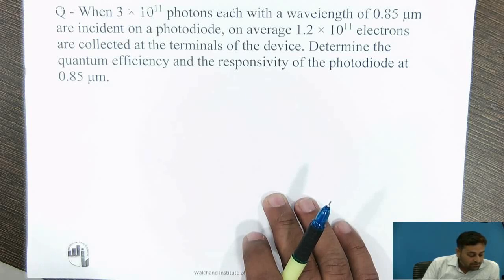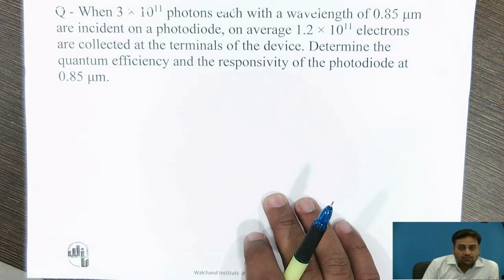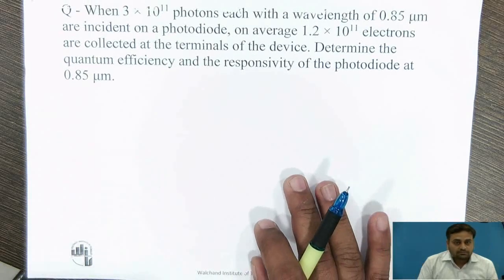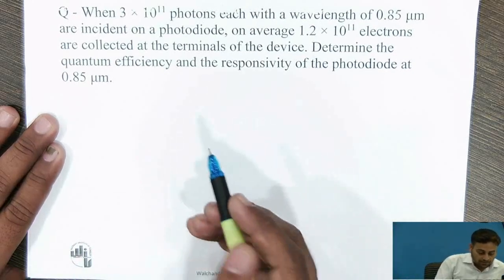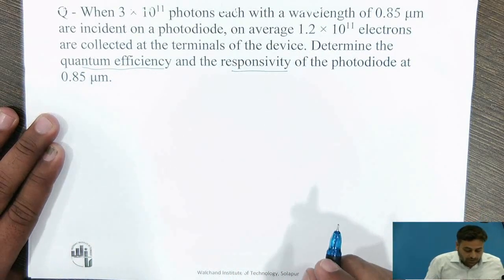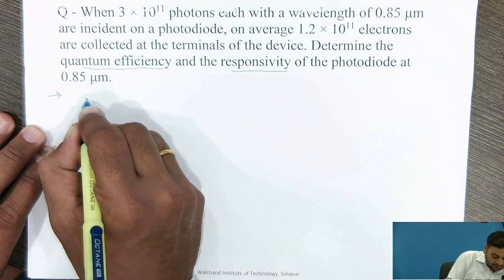Here we have a problem: when 3 × 10¹¹ photons, each with a wavelength of 0.85 micrometer, are incident on a photodiode, on average 1.2 × 10¹¹ electrons are collected at the terminal of the device. Determine the quantum efficiency and the responsivity of the photodiode at 0.85 micrometer. We are asked to calculate the quantum efficiency and the responsivity.